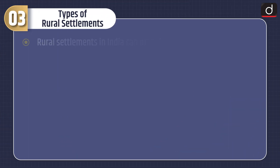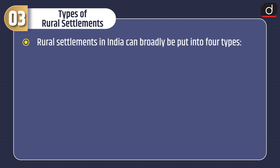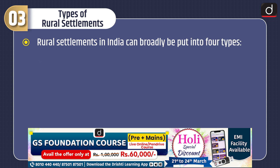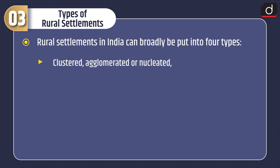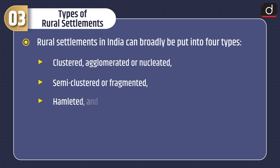Types of rural settlements. Rural settlements in India can broadly be put into four types: clustered, agglomerated or nucleated; semi-clustered or fragmented; hamleted; and dispersed or isolated.